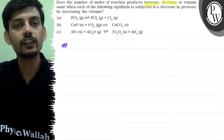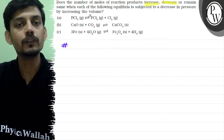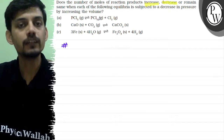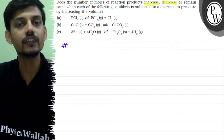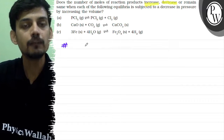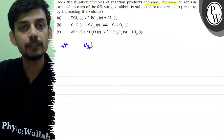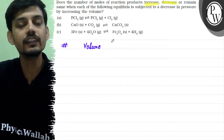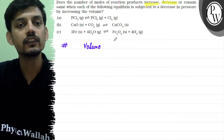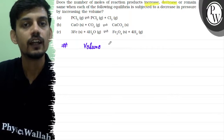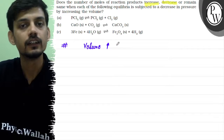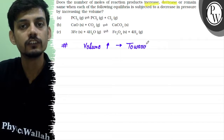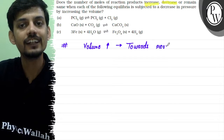The key concept here is Le Chatelier's Principle. According to Le Chatelier's Principle, when any reaction already at equilibrium is subjected to any change, that change is opposed by the equilibrium — the equilibrium tries to minimize that change. Volume, temperature, and nature of the reagents are the three things that directly affect the reaction. As the concept goes, when volume is changed, the reaction always shifts in that direction to nullify the effect of the change, towards whichever side has more gaseous moles.